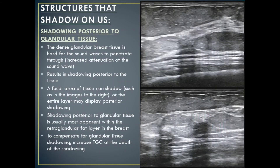Glandular tissue in the breast is also a dense structure, producing shadowing posterior to it. The dense glandular breast tissue is hard for sound waves to penetrate, resulting in increased attenuation and shadowing posterior to the glandular tissue. A focal area of tissue can shadow, such as in the images to the right, or the entire glandular tissue layer may display posterior shadowing — usually most apparent within the retroglandular fat layer. To compensate for glandular tissue shadowing, increase TGC at the depth of the shadowing.